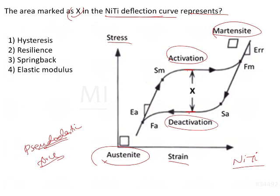There is an energy loss seen between activation and deactivation. Clinically this is very important because it tells us that when the wire is activated into the arch, the load deflection rate is going to be lower during deactivation. This difference between the energy levels, marked as X here, is known as hysteresis.